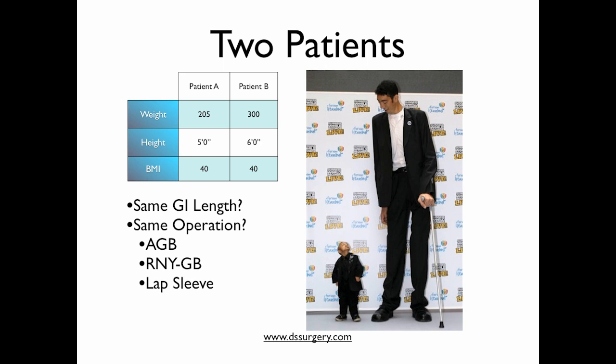They not only do not have the same GI length, and from a nutritional point of view, this explains why, if these two patients were subjected to the same operation — such as a cookie-cutter gastric bypass, gastric banding, or to some degree the sleeve — their outcomes may be so different.